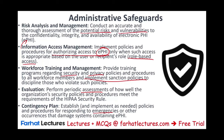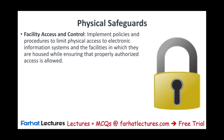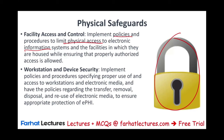Physical safeguards involve actual, physical security measures. This includes locks on doors to prevent unauthorized access — especially for paperwork or server access — and facility access controls to limit physical access to electronic information and the facilities where information is housed. Workstation and device security is also important: for example, computers should lock out after a short period of inactivity. Have policies regarding the transfer, removal, disposal, and reuse of electronic media — because losing a computer or cell phone containing PHI is a serious issue.